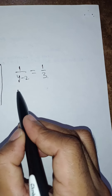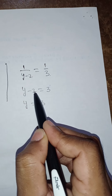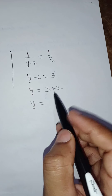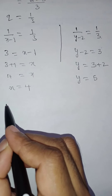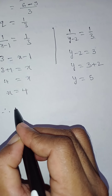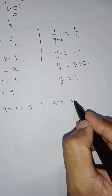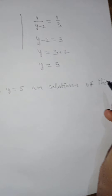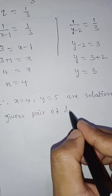Similarly, since 1 by (y minus 2) equal to q equal to 1 by 3, the denominators are equal, so y minus 2 equal to 3, giving y equal to 3 plus 2 equal to 5. Therefore, x equal to 4 and y equal to 5 are the solutions of the given pair of linear equations.